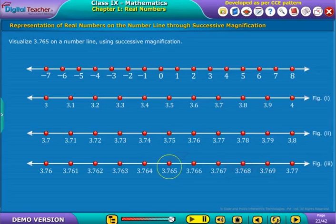This is how the terminating decimal expansion on a number line is represented. Now, let us represent non-terminating recurring decimal on a number line.